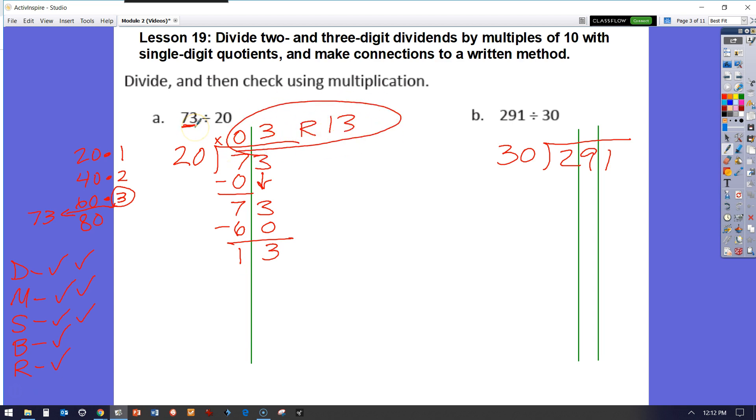If I had 73 and I decided to split it by my 20 students, every student would get $3 and I would have $13 remaining. I couldn't give out those remaining $13 because I don't have enough for each student, each of my 20 students to get one.